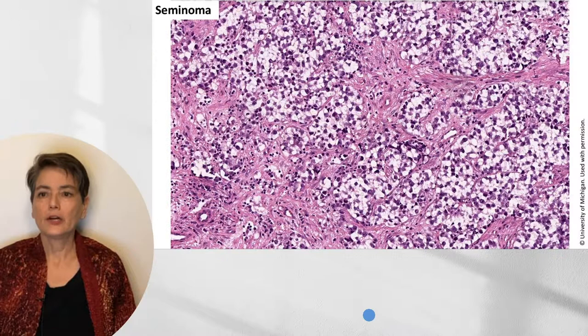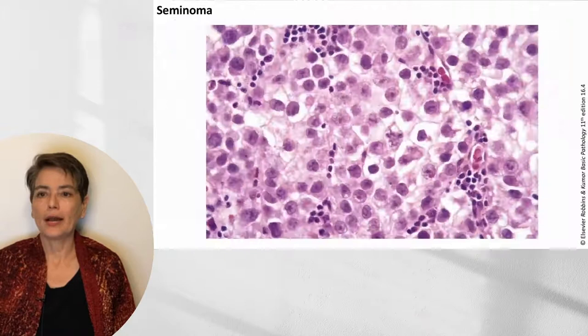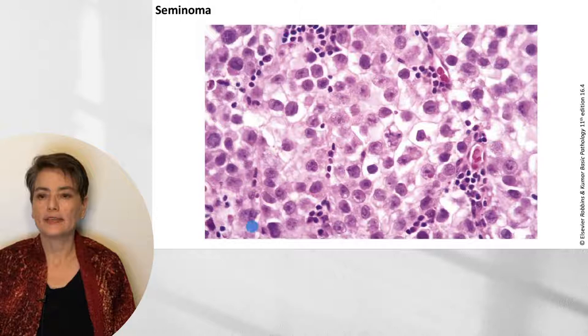Here is a classic low-power view of seminoma where you can see these delicate fibrous septa and clear cells with central nucleoli. Even at this power you can appreciate small round lymphocytes infiltrating through. On higher power, you can see the fried egg appearance as well as these lymphocytes. This is a very classic appearance, and you should be able to recognize this in most medical schools and on your board exams.